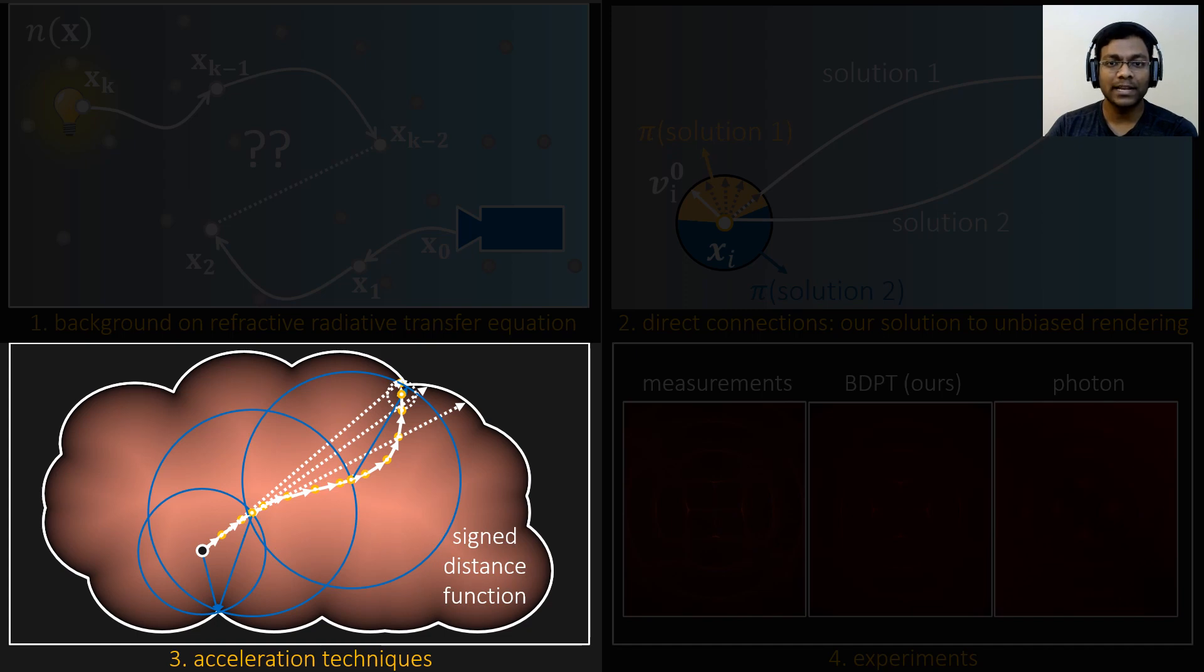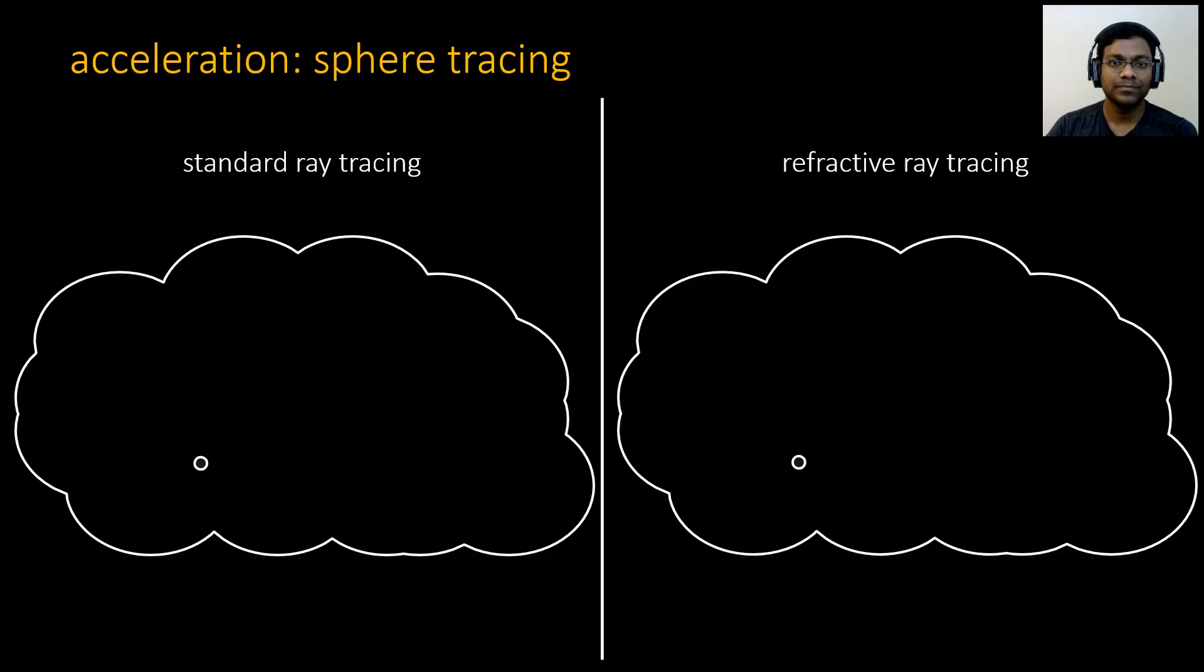Let's look at some ways to accelerate the algorithm. In standard ray tracing, for every ray we have to do one ray intersection test, and that intersection test will tell us how long we have to travel to get outside the medium. If we are traveling less than that distance, we will be inside the medium. In refractive ray tracing, we would have multiple such intersection tests, one for every step that I am taking. This is quite expensive.